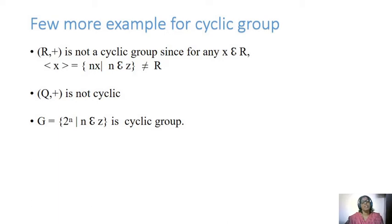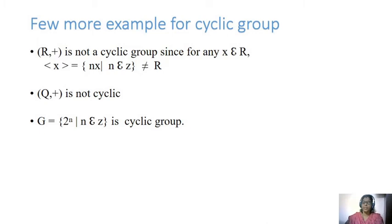Q⁺ under addition is also not a cyclic group. And G equals {2^N : N belongs to Z} is a cyclic group. Please refer and verify whether these are cyclic groups or not — it is for your practice.